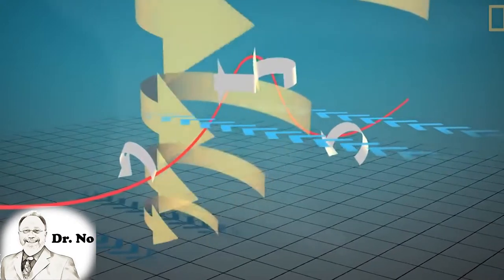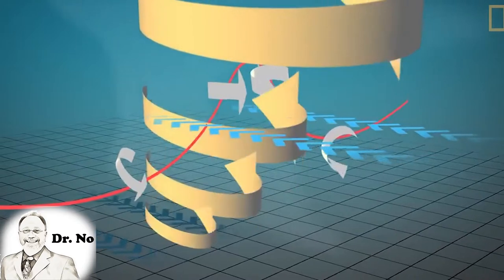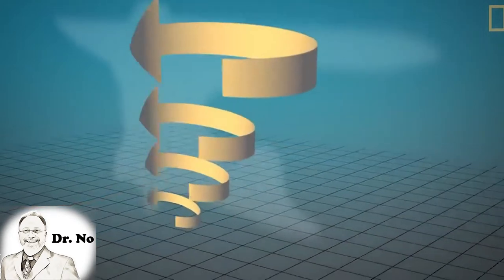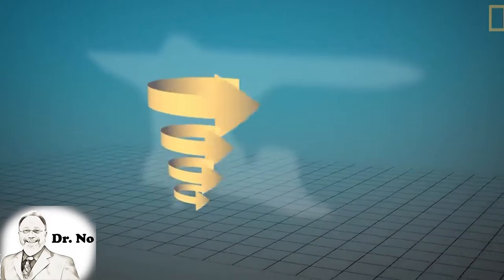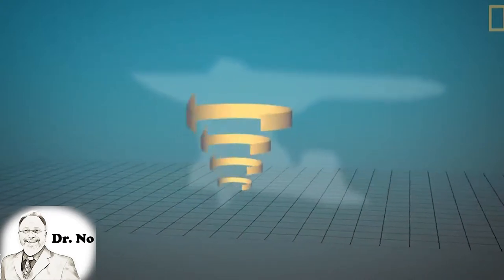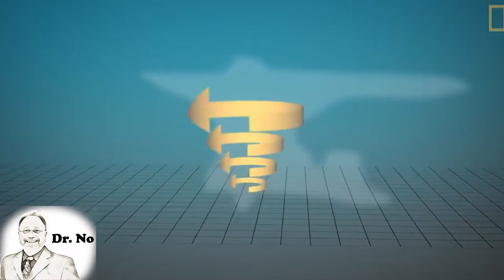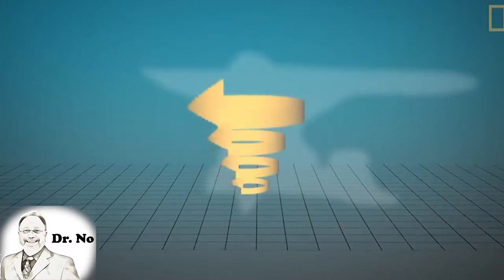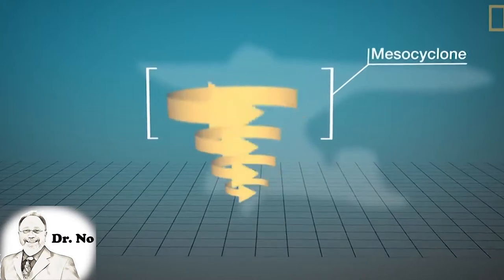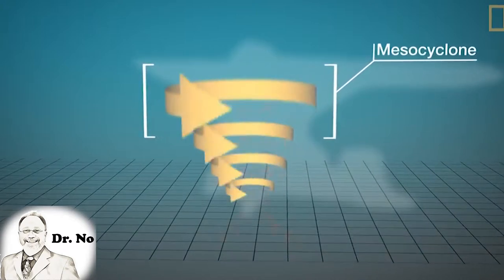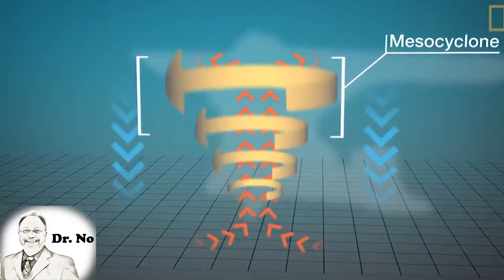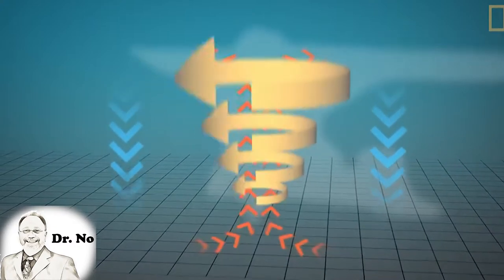Most tornadoes form during a supercell thunderstorm, but not all supercell thunderstorms produce tornadoes. Usually, the rotating air near the ground does not rotate fast enough for a tornado to form. If the rotating air near the ground is very cold, it will spread away from the storm along the ground and slow down — like a figure skater when they extend their arms — and a tornado will not form.